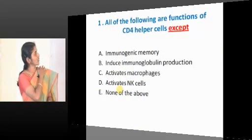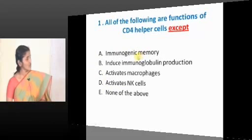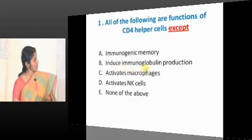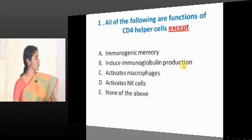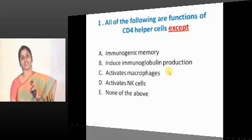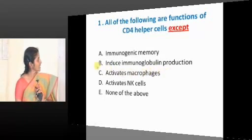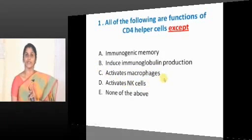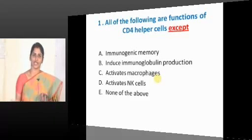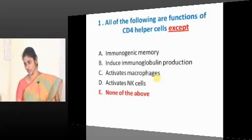Question: All of the following are functions of CD4 helper T cells except. So, immunogenic memory — is it a function of CD4 helper T cells? Yes, because memory T cells are a subset of helper T cells. Induced immunoglobulin production — is it true? Yes. Activate macrophages — yes. Helper T cells activate B cells, macrophages, cytotoxic T cells, and NK cells. That's why they are called masters. So the answer is none of the above.